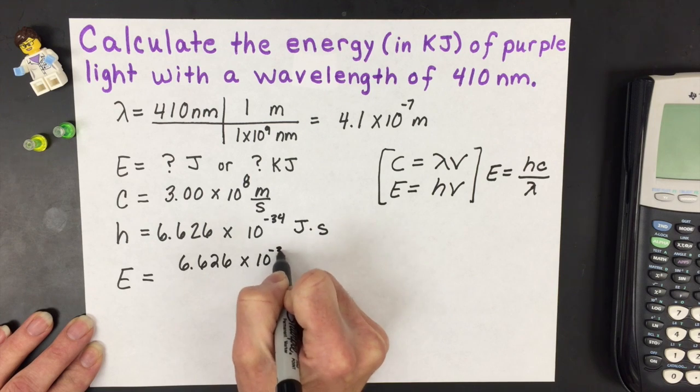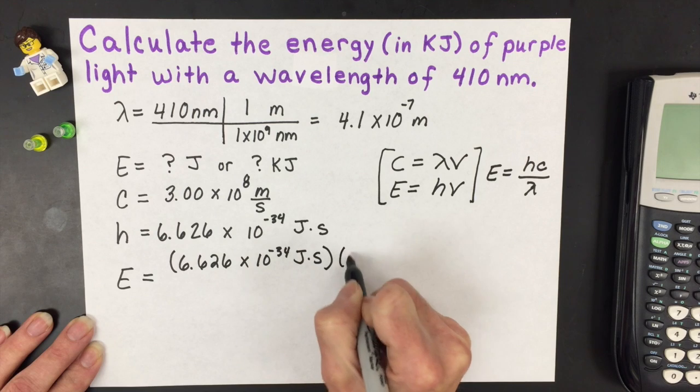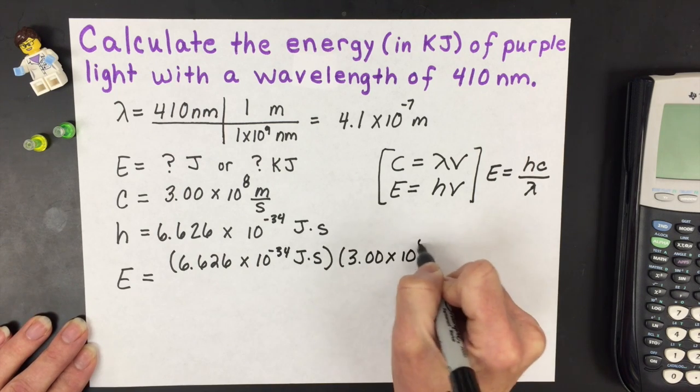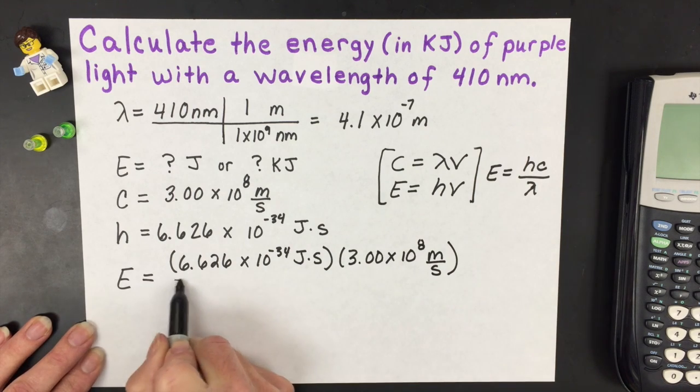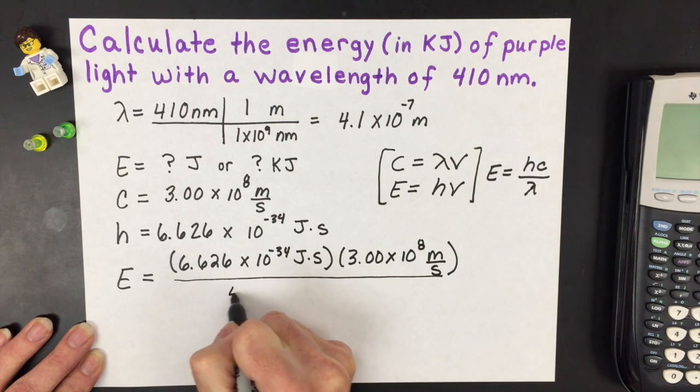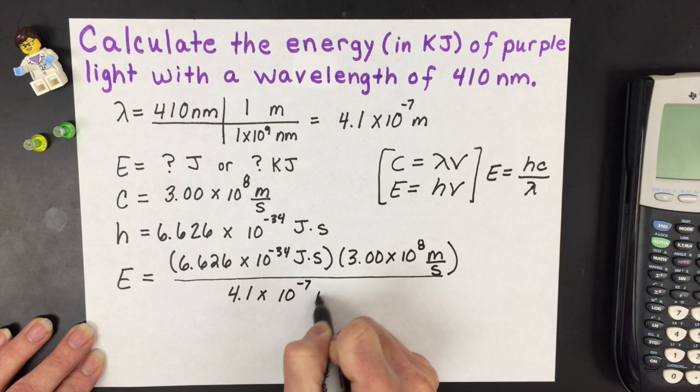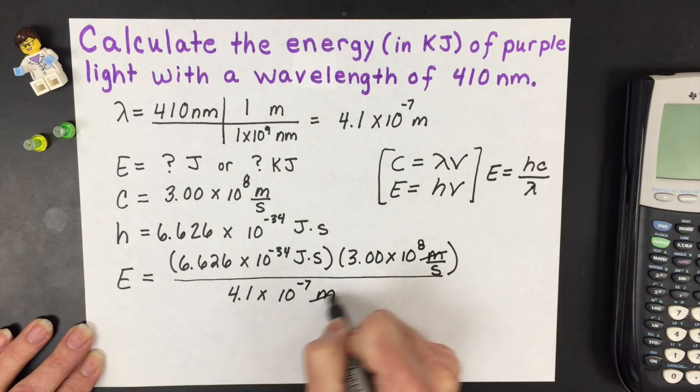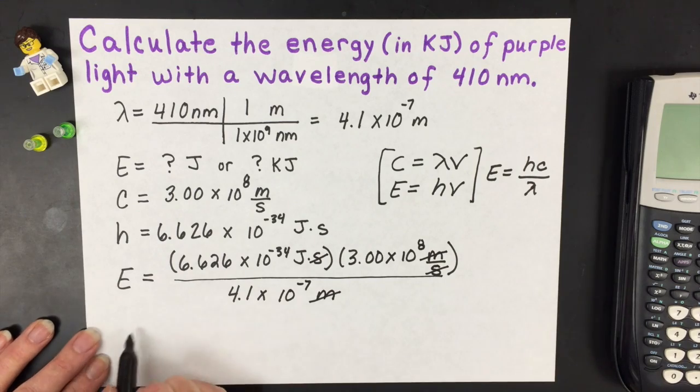So again Planck's constant, speed of light, and then all divided by the wavelength, which I have in meters so that my units can cancel. Meters will cancel and seconds will cancel. So I will end up with the correct unit of joules.